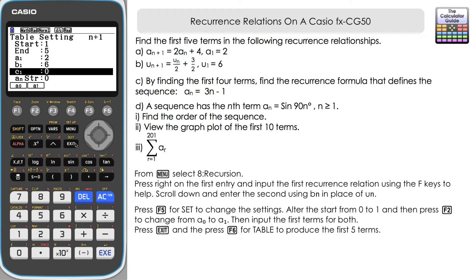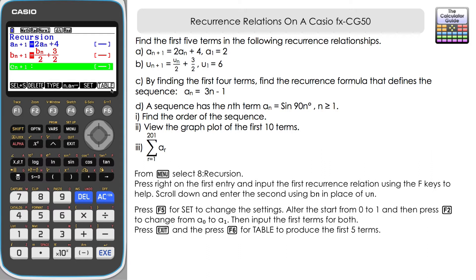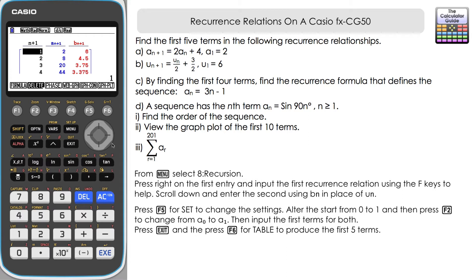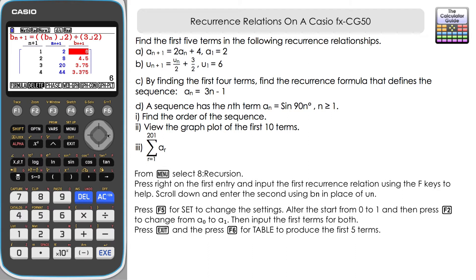Now we've got those entered. Exit out and press F6 for Table — we should have our first five terms here. Looking at the blue column, the first five terms of sequence A are 2, 8, 20, 44, and 92. The B_(n+1) column — our U sequence — displays decimal figures, but navigating to each value shows the fraction equivalent in the bottom right corner. The fifth term comes out to 3.1875.